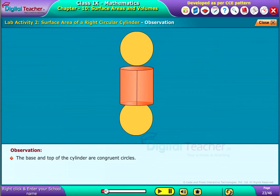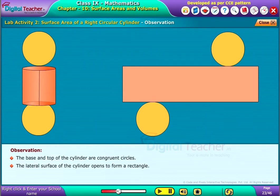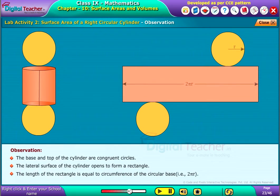The base and top of the cylinder are congruent circles. The lateral surface of the cylinder opens to form a rectangle. The length of the rectangle is equal to circumference of the circular base, that is, 2πr.